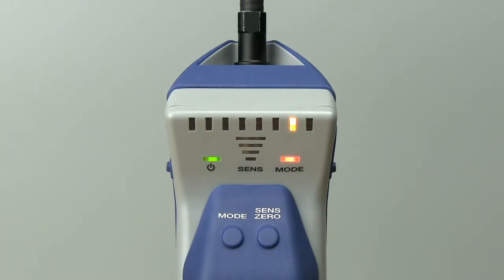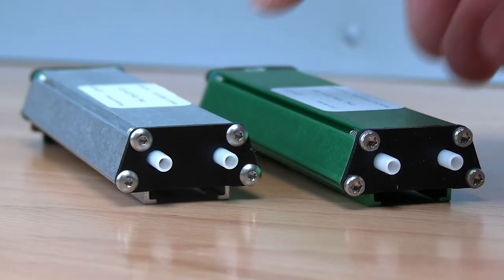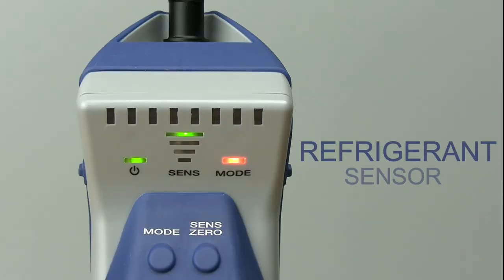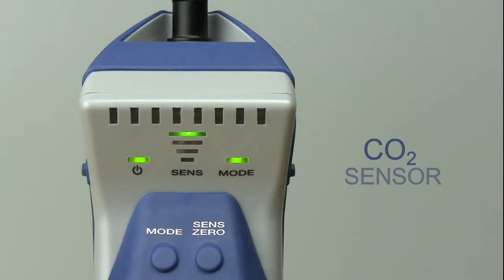DTEK3 will automatically sense if you have inserted a different sensor type, like the CO2 sensor. The mode indicator will change color to indicate the sensor type that's installed. Orange indicates the standard refrigerant sensor and green indicates the CO2 sensor.